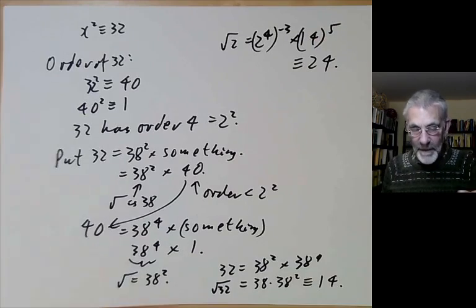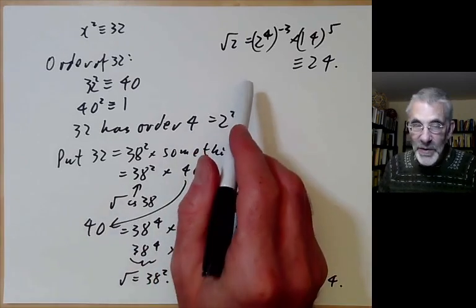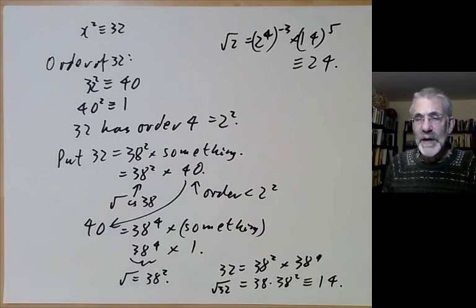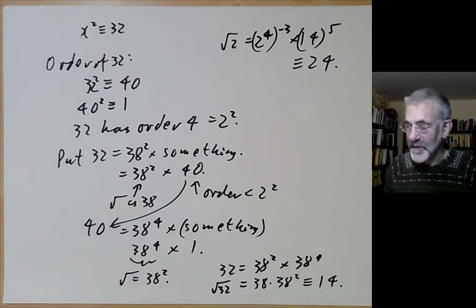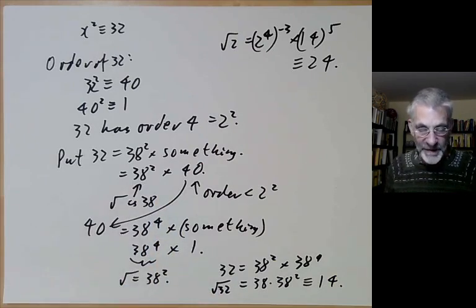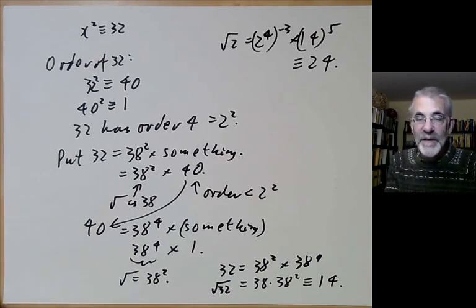A similar version of this method can find not only square roots but also cube roots, fourth roots, and fifth roots by doing something slightly more complicated. In the next lecture, we'll discuss the Cantor-Zassenhaus method for finding roots of arbitrary polynomials.